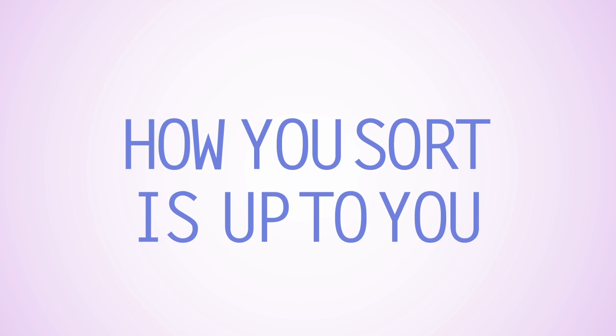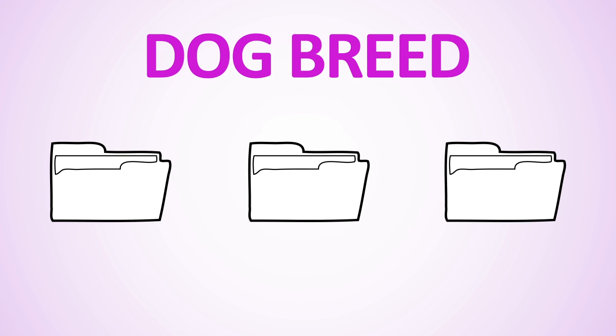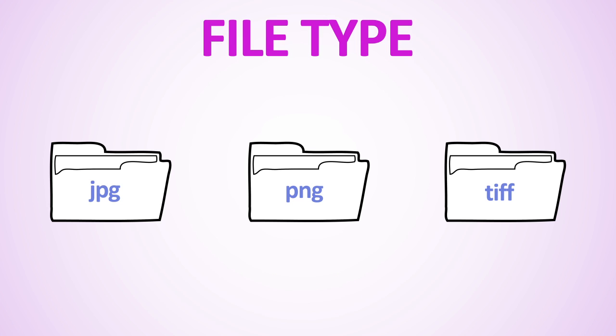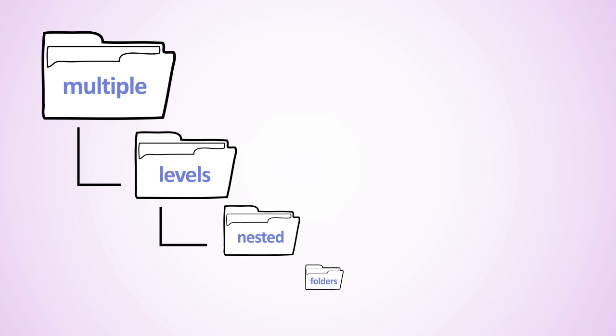Of course, structuring your folders by month is not the only way to do it. Chronology may seem like the obvious categorization, but it really depends on what is most important about the project. You may choose to sort the images by dog breed with each breed in its own folder, or you might prefer to sort by dog color or age. The type of file may also be important and thus be the deciding factor in structuring your folders.